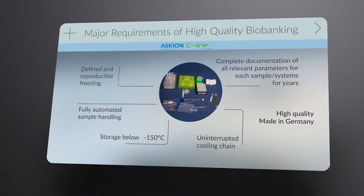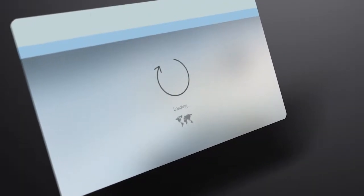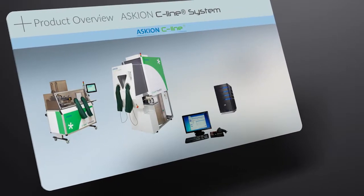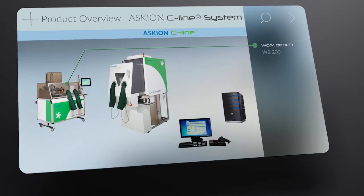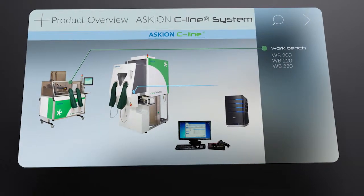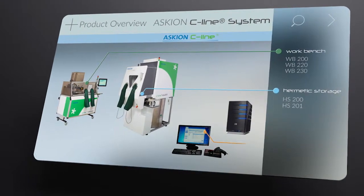They guarantee a high degree of quality for your samples. Our system solution consists of three components: Ascheon C-Line Workbench, Ascheon C-Line Hermetic Storage, and Ascheon C-Line Control.